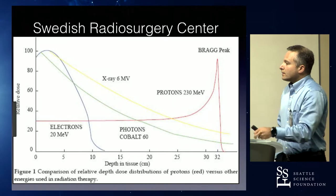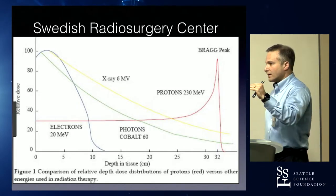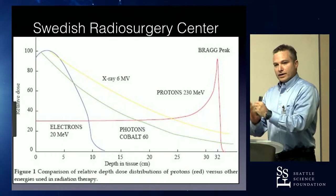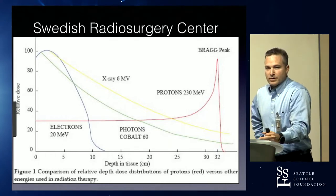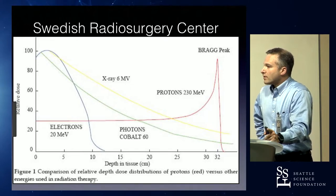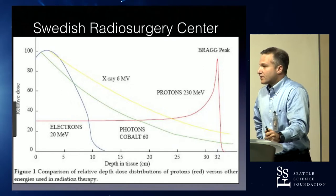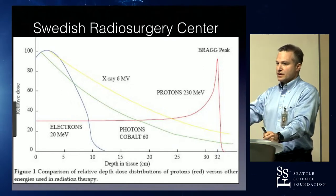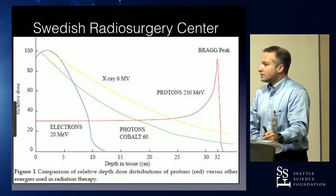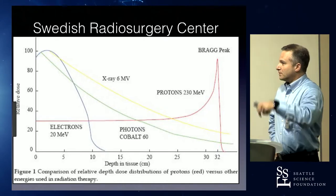The proton is unique. It basically goes along delivering about 20% of its energy along its path length, and then as it slows down it drops all of its dose — this is called the Bragg peak. It's useful when you want to treat something deep and spare things that are superficial. It's important to remember, though, that there is that 20% entrance dose. It's a charged particle going to interact with matter; it has dose along the entire way, and drops all its dose when it starts to slow down and tumble.